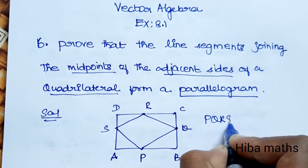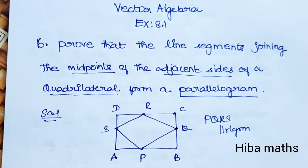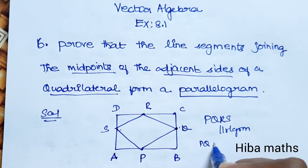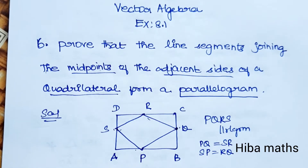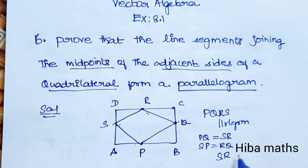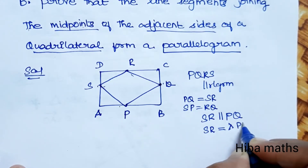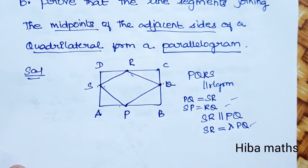P, Q, R, S form a parallelogram. I will prove to you. The condition for a parallelogram is that opposite sides are equal. So PQ equals SR, and PQ is parallel to SR. Similarly SR equals and is parallel to PQ. These are the conditions we will prove. This sum is solved as follows.